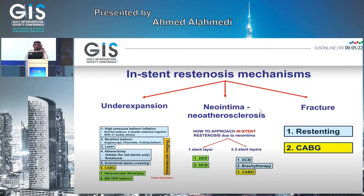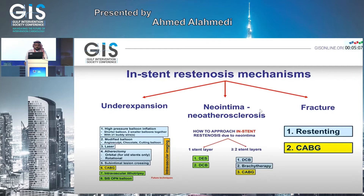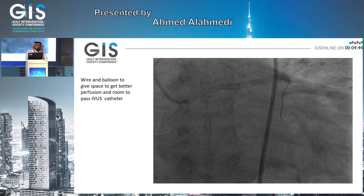We have an algorithm for stent failure. One of the most common causes of in-stent failure is in-stent restenosis. We have three factors: under-expansion — a mechanical cause — or biological neointimal hyperplasia, or neoatherosclerosis. Without imaging you cannot decide the pathology, so as per Class 2a we planned to do IVUS, but you cannot pass IVUS in this type of lesion, so we wired the lesion.